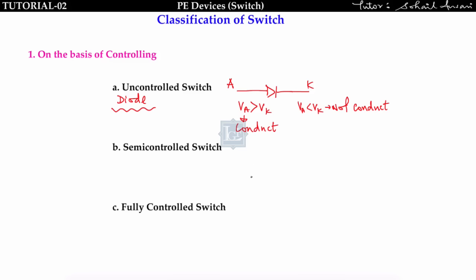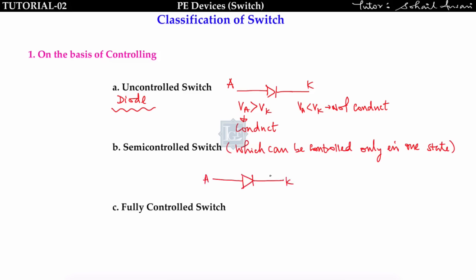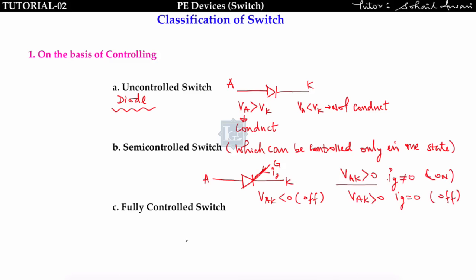Semi-controlled switches can be controlled in only one state — either on or off. Example: SCR. When V_AK > 0, it will not conduct unless gate current is supplied. We can control the turn-on by supplying gate current, but we cannot control turn-off — it turns off automatically when V_AK < 0. So SCR is a semi-controlled switch.